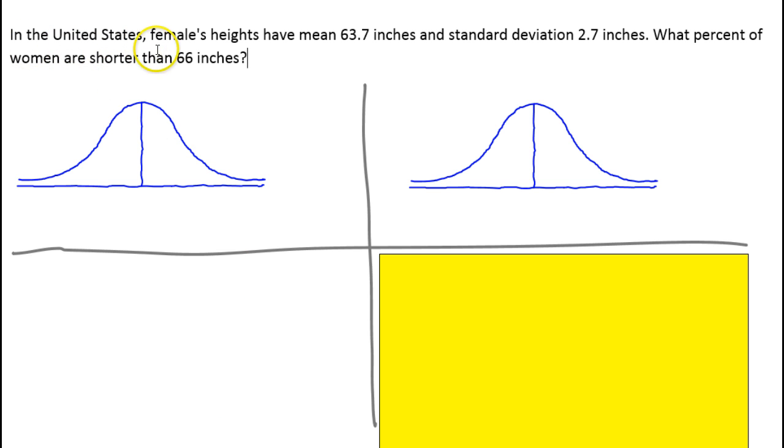In the United States, females' heights have a mean of 63.7 inches and a standard deviation of 2.7 inches. What percent of women are shorter than 66 inches?